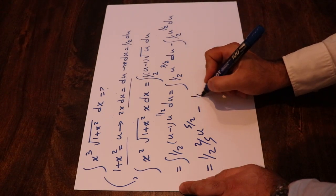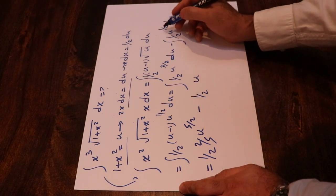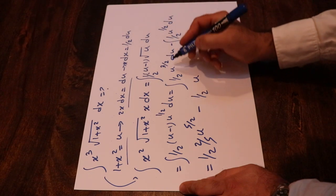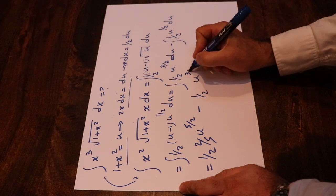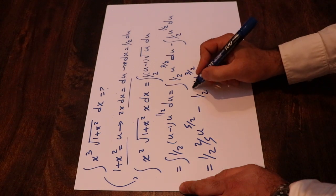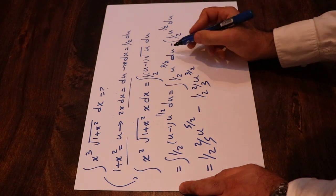Minus (1/2) times u^(1/2 + 1), that will be u^(3/2), divided by (3/2), which will be 2/3.